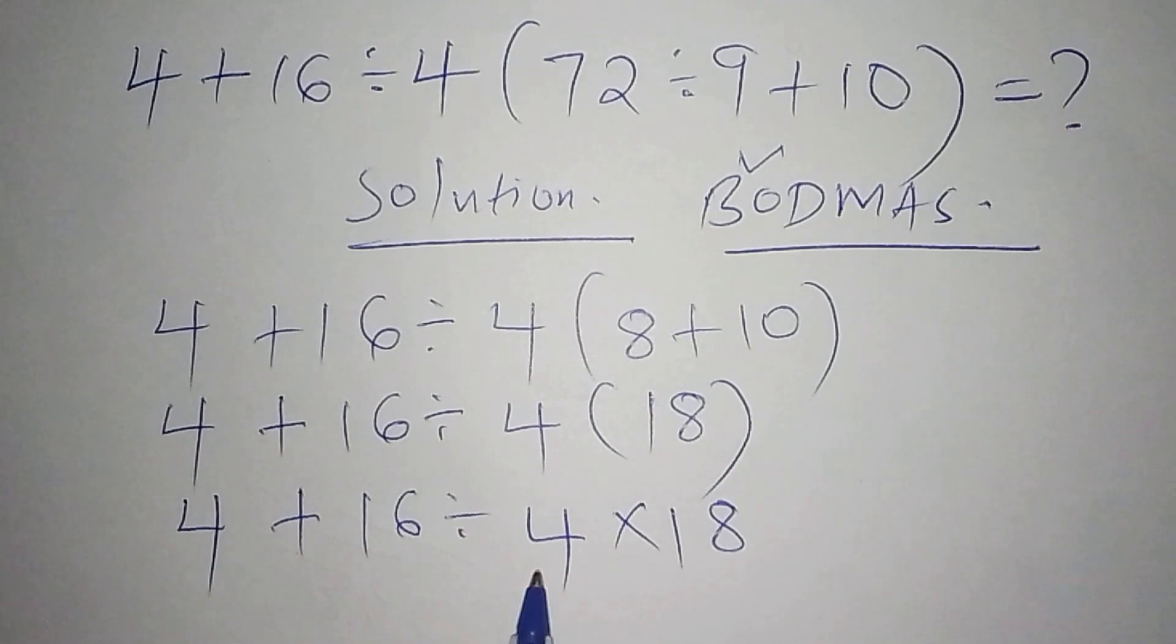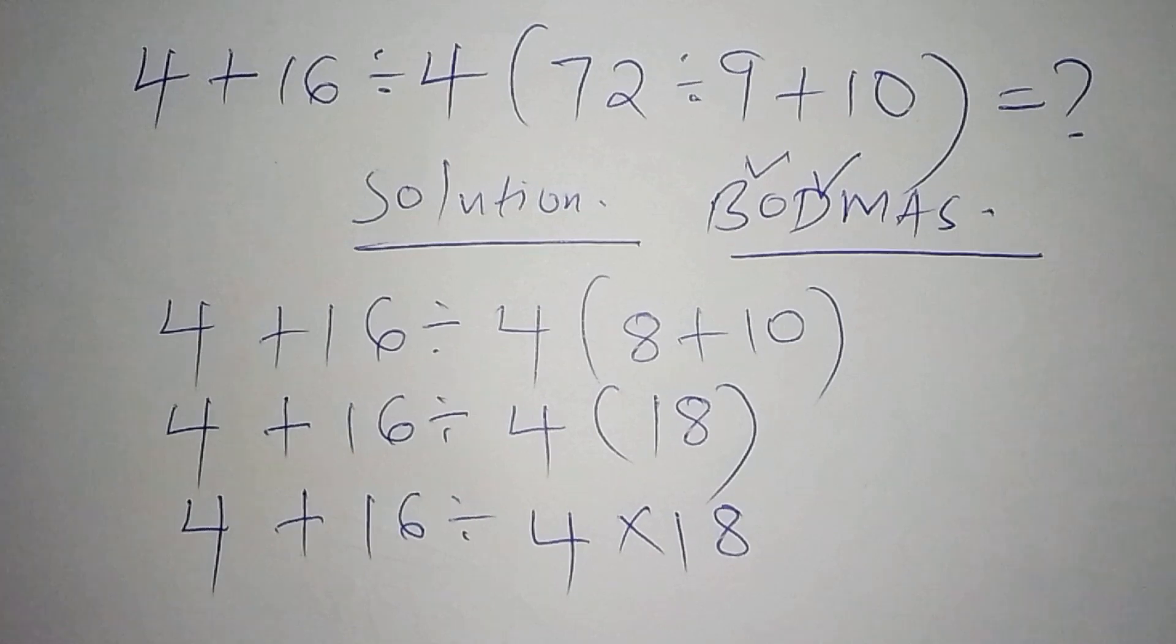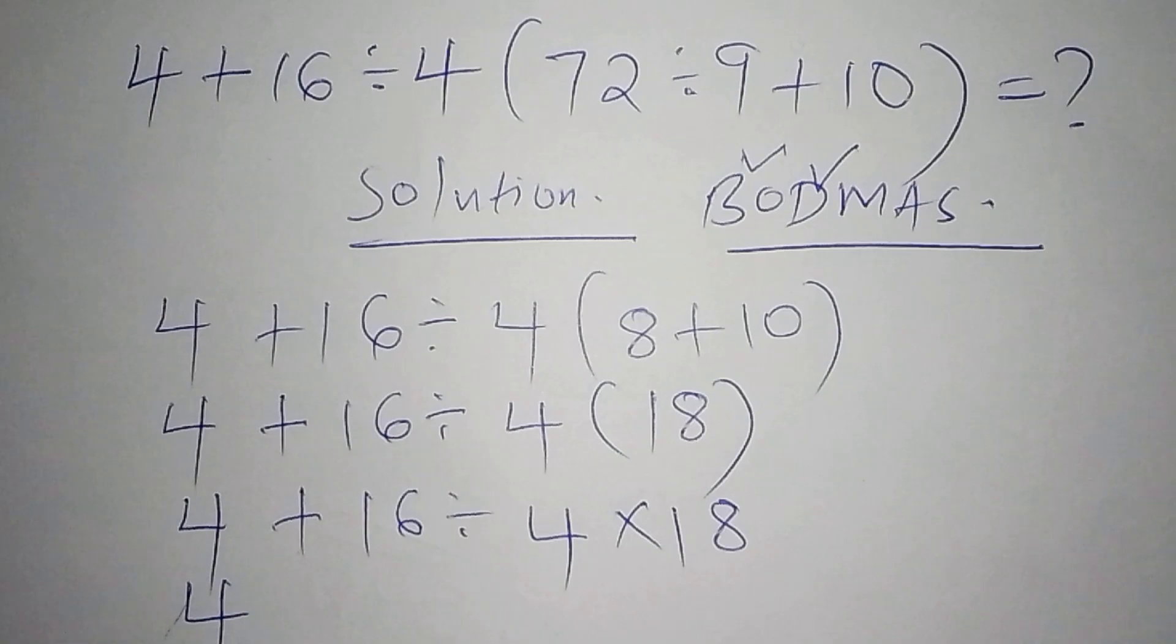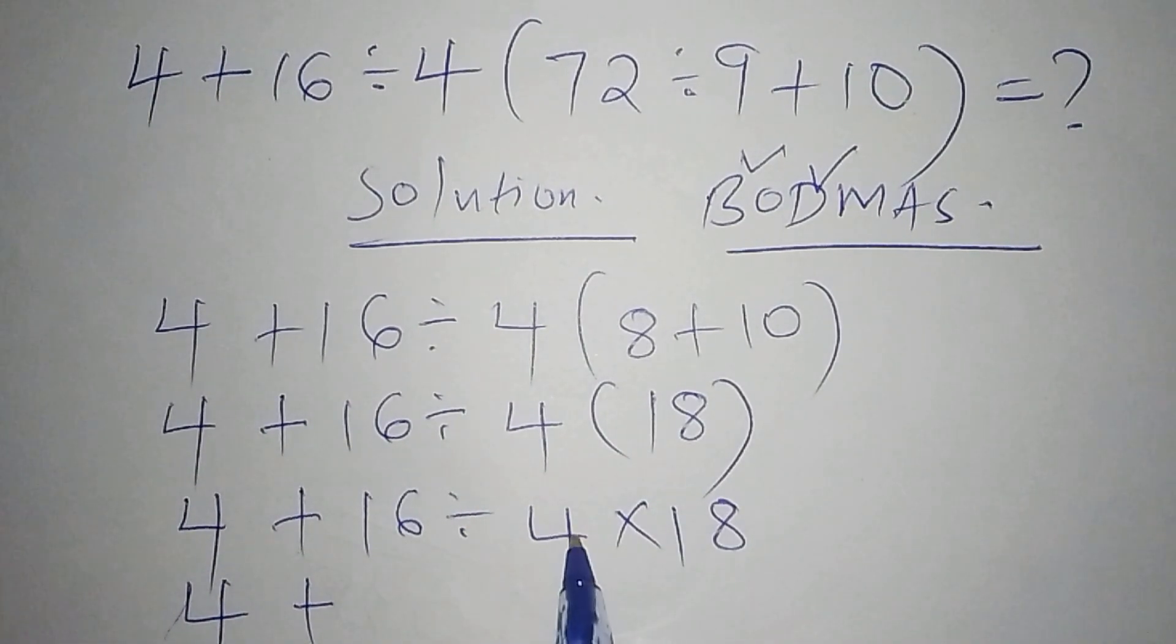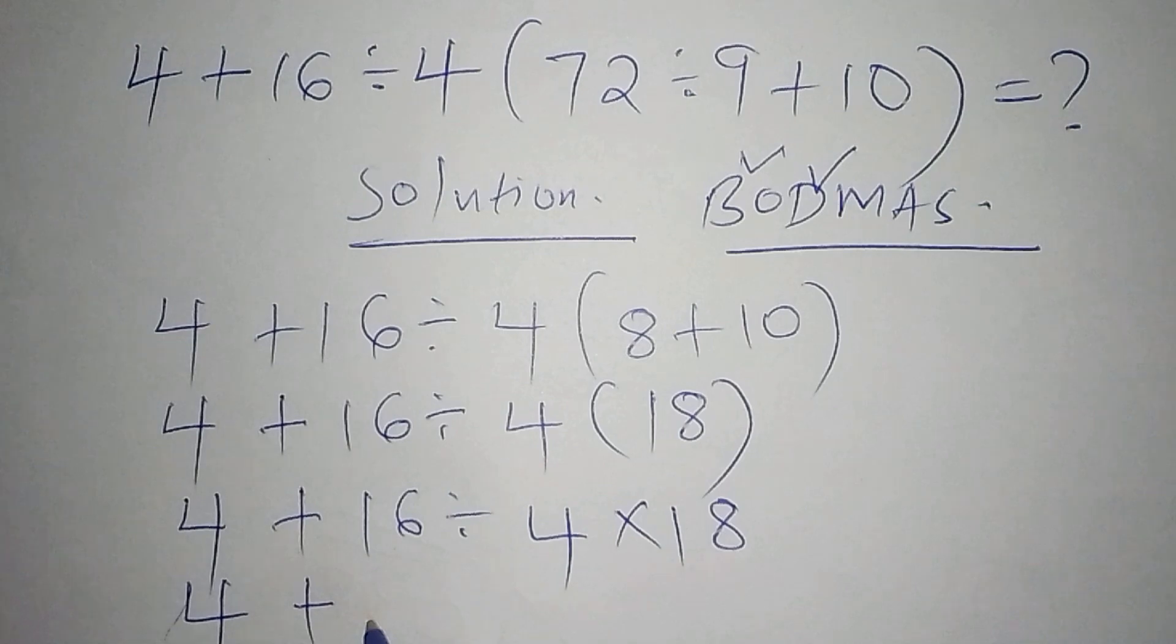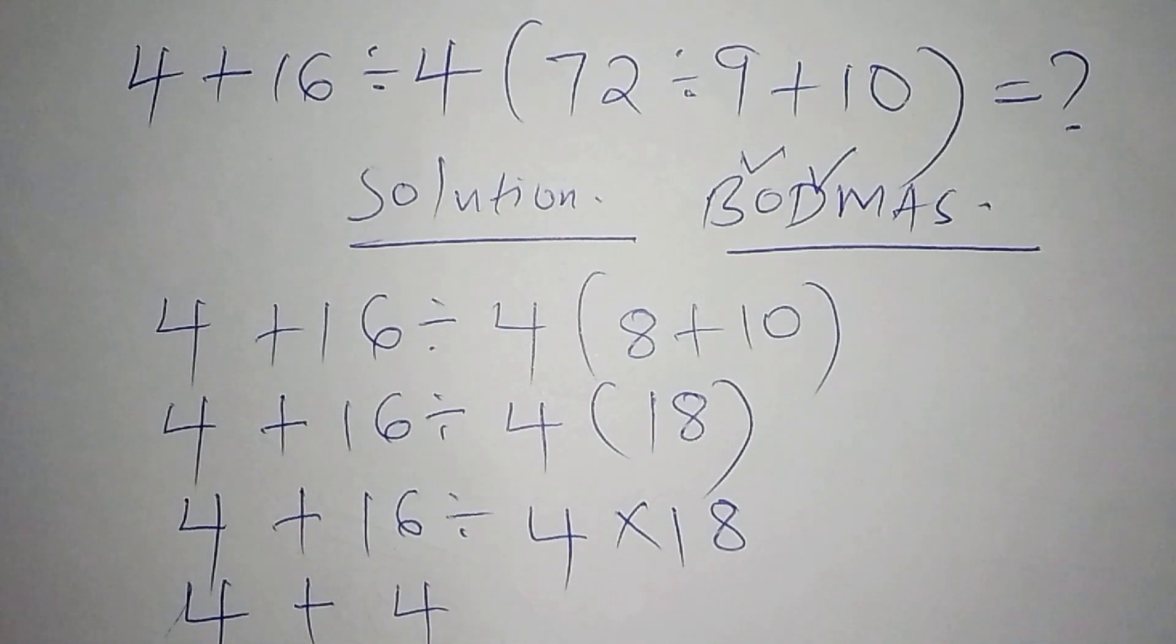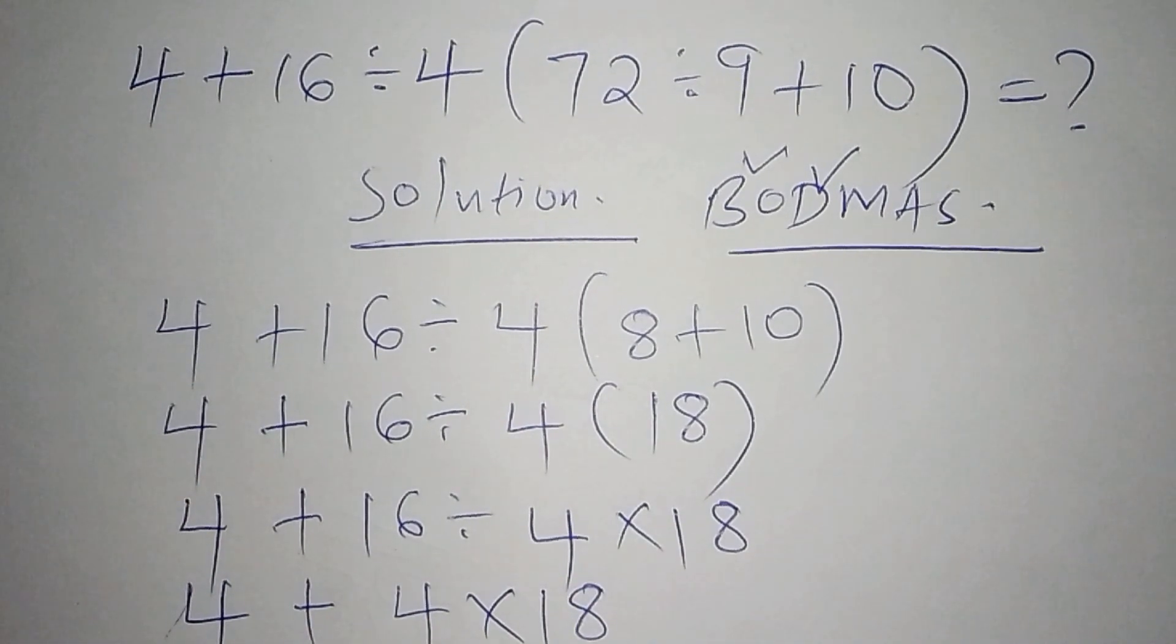Our next step is to work out the division sign, because here we have multiplication and here we have addition. The next step: we shall have 4 + (16 ÷ 4), which is 4 (because 4 × 4 = 16, so 16 ÷ 4 = 4) × 18.